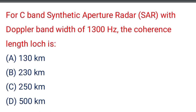Next question: C-band synthetic aperture radar (SAR) with a Doppler bandwidth of 1300 — the coherent length is — option A: 130 km, option B: 230 km, option C: 250 km, option D: 500 km.